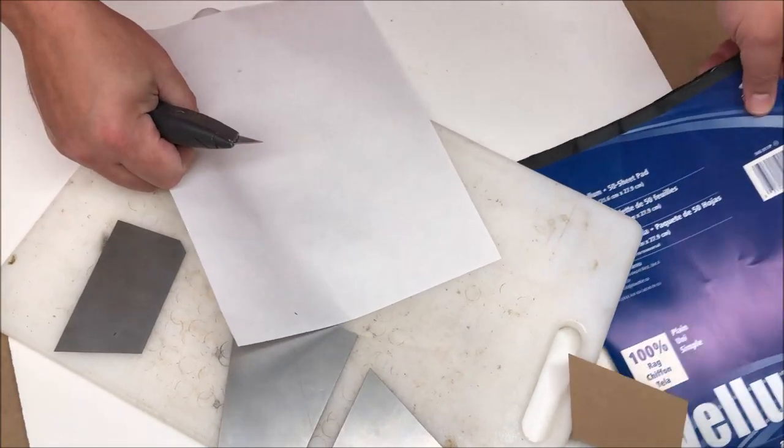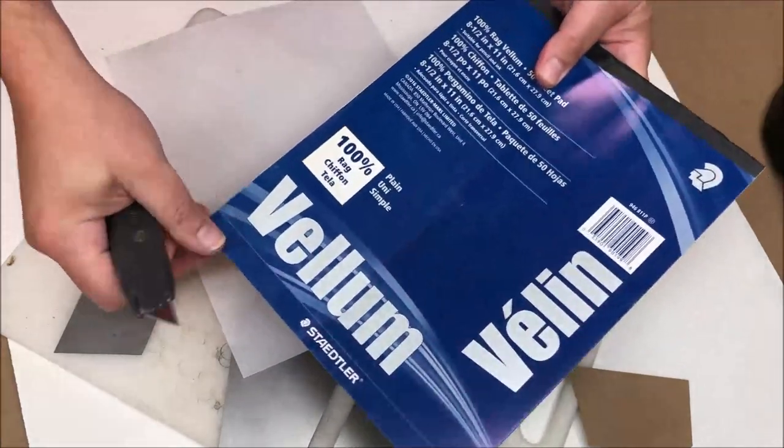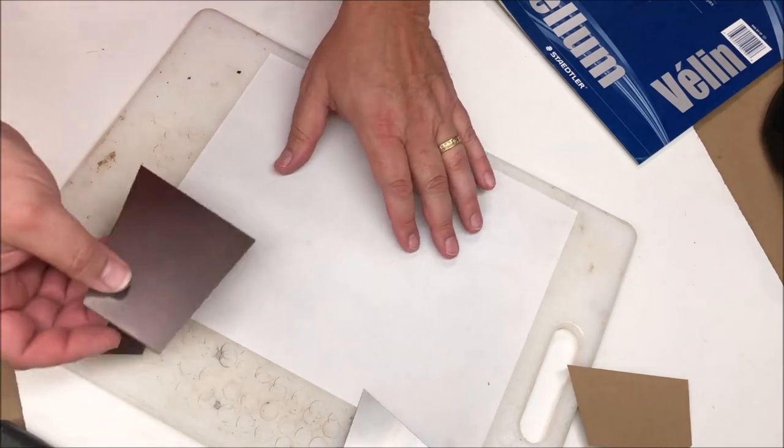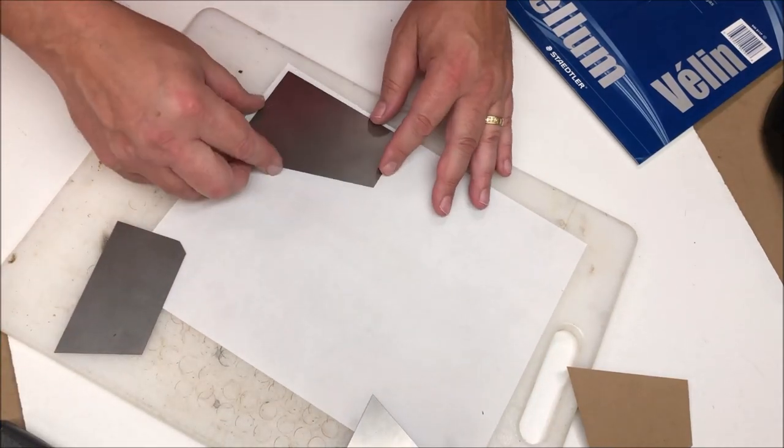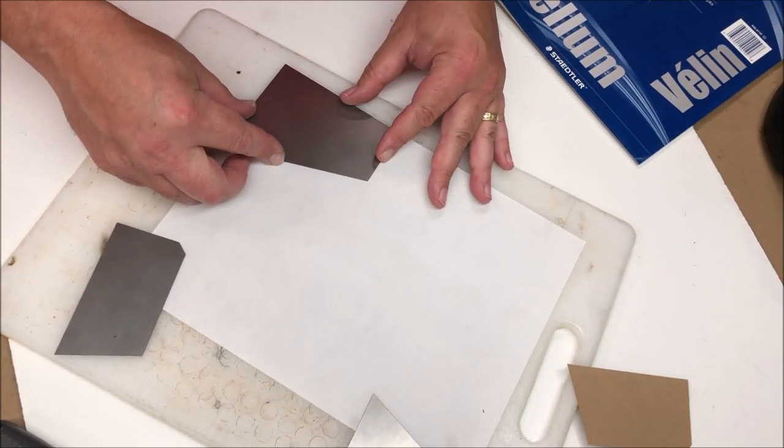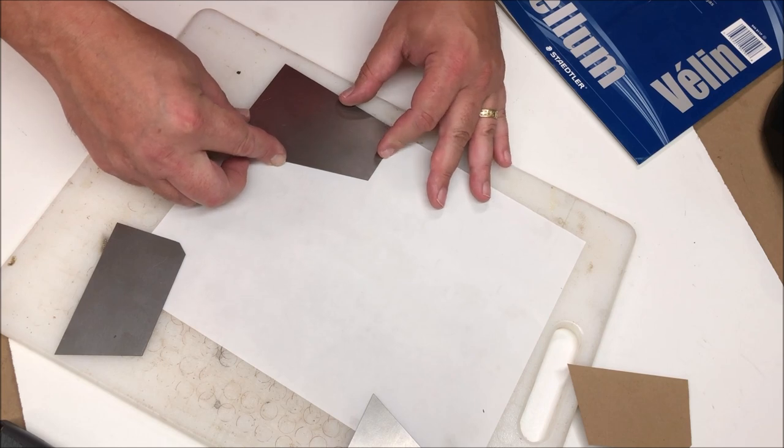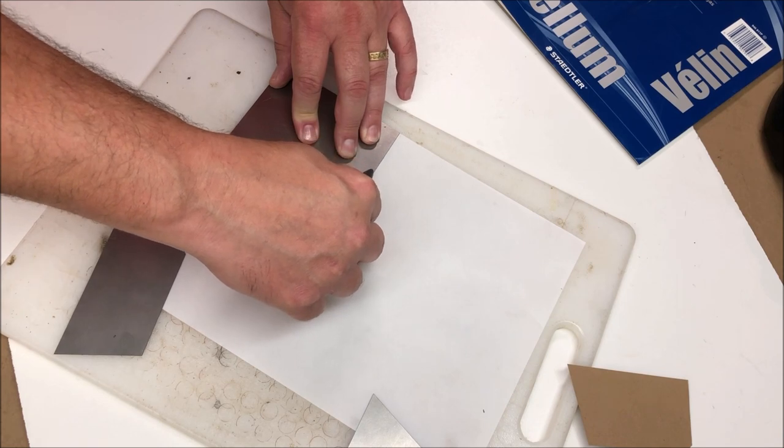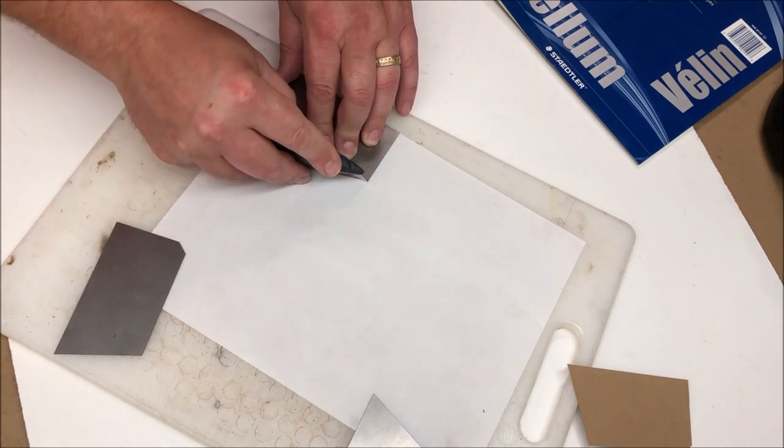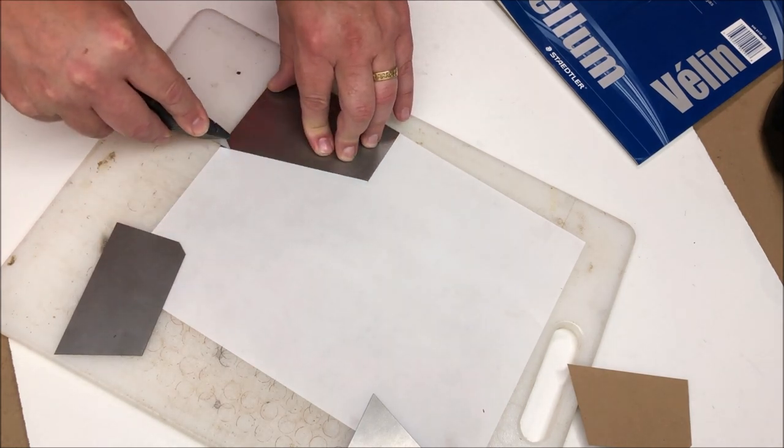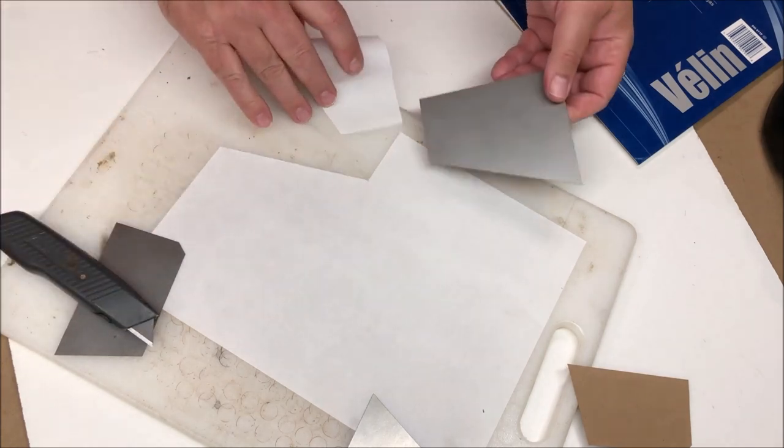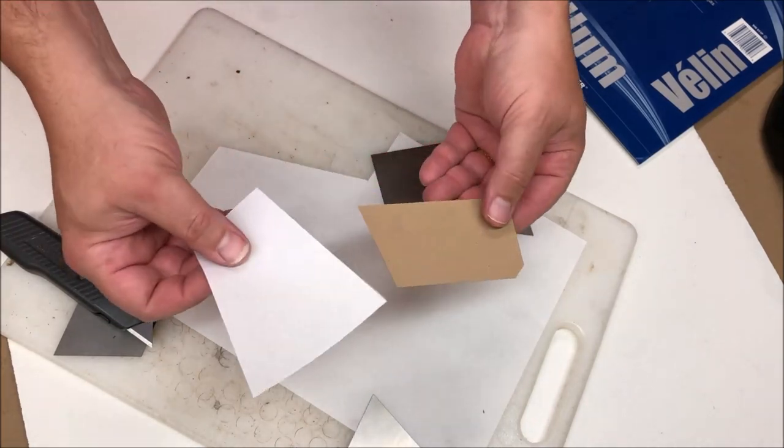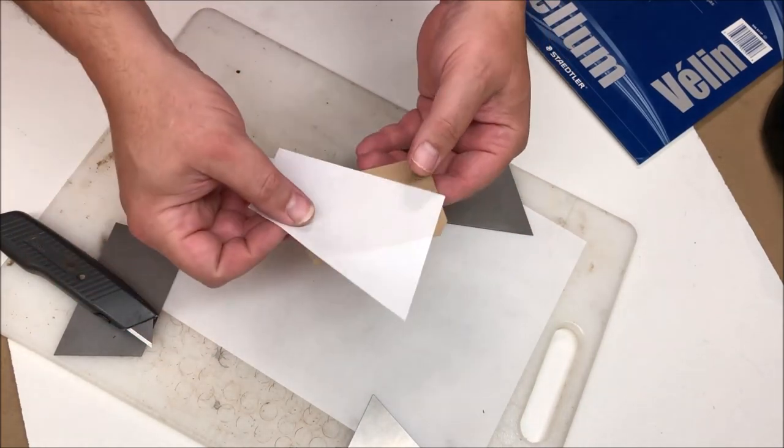And there's one piece. Then we've got our 100% cotton rag paper that I just got off Amazon, and we'll take the powder chamber outer wrapper template. Of course you can cut through multiple layers of paper at one time. You don't have to do these one at a time like I'm doing for the demonstration.